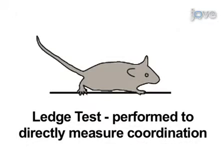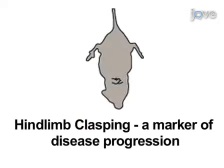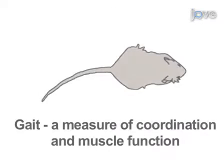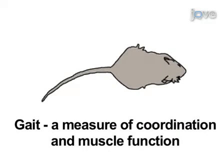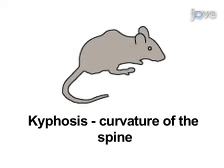The ledge test is performed to directly measure coordination. Hind limb clasping is a marker of disease progression in a number of mouse models of neurodegeneration. Gait is a measure of coordination and muscle function. Kyphosis is curvature of the spine in the cervicothoracic region, common in mouse models of motor system and spinocerebellar neurodegeneration.